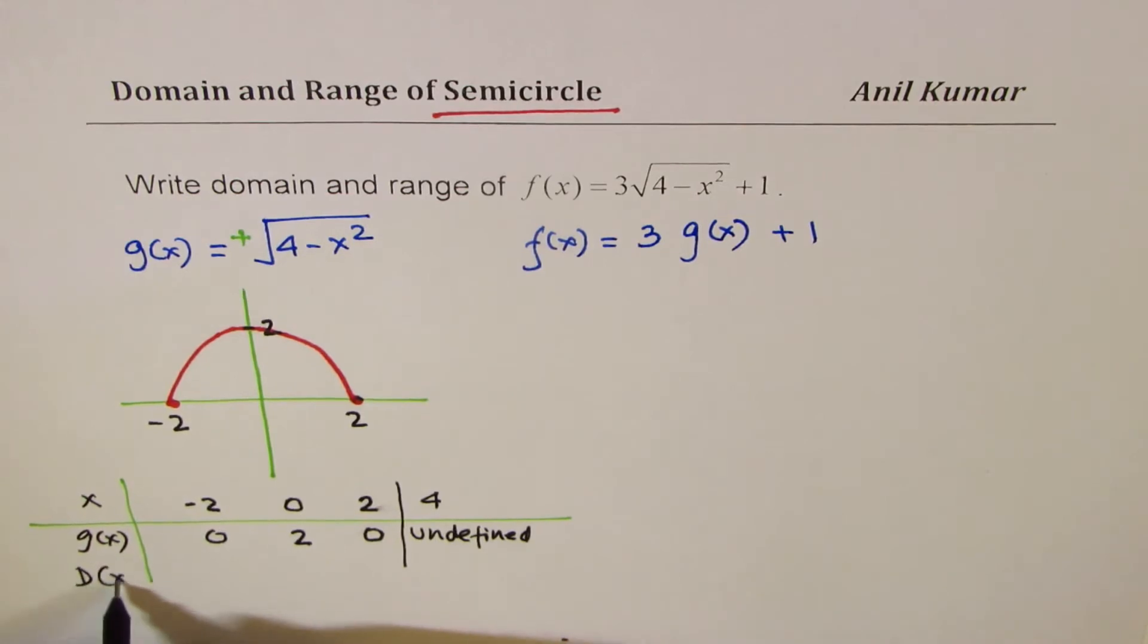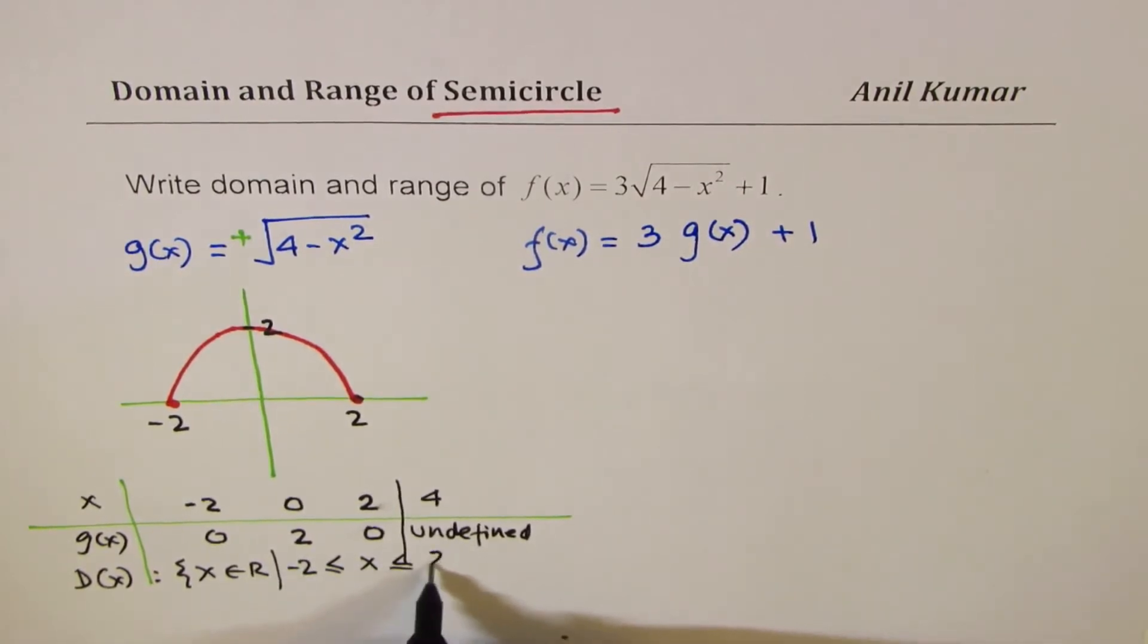Let me write it down. So domain of this function is x belongs to real numbers, where x is between plus and minus 2, right? So we say x is greater than or equal to minus 2, however, less than or equal to 2.